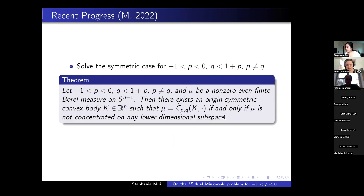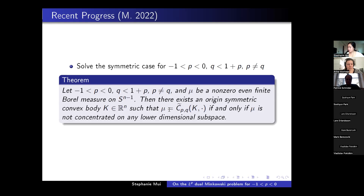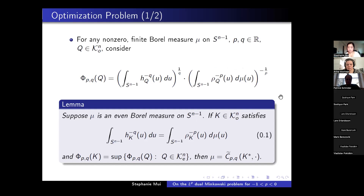We provide a solution for the case of symmetric given data with P between −1 and 0, Q less than 1 + P, and P ≠ Q. Given that the data mu is symmetric and a finite Borel measure on the unit sphere, there exists an origin symmetric convex body whose PQ dual curvature measure equals the given data mu. We require that the given data is not concentrated on any lower-dimensional subspace, to guarantee that the shape will close. This is the main theorem.